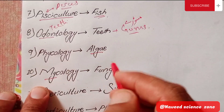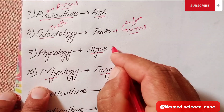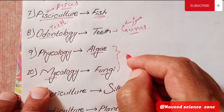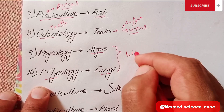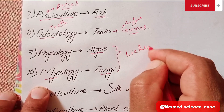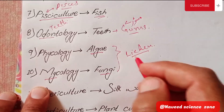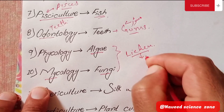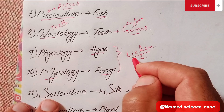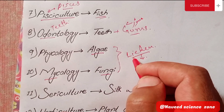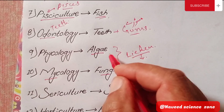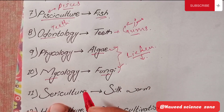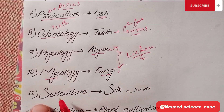The next branch is Mycology, which involves the study of fungi. Collectively, this branch also covers lichens along with fungi. Lichens are studied under this branch as well. Mycology is the biology branch dealing with fungi and related organisms.